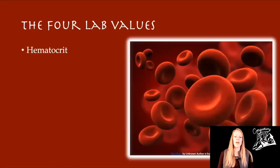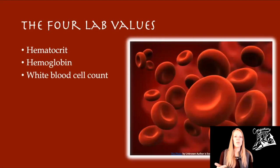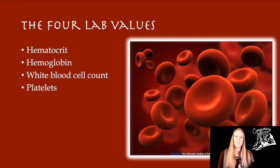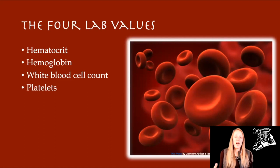Our four lab values are going to be hematocrit, hemoglobin, white blood cell count, and platelets. Let's define what these things are, because that's actually going to help you when you're trying to eliminate or pick an answer on the test. All those values have something to do with our blood, and that makes sense — because if we lack blood, then we have tissue death. That is why we focus on these, and that's why these lab values are actually important.